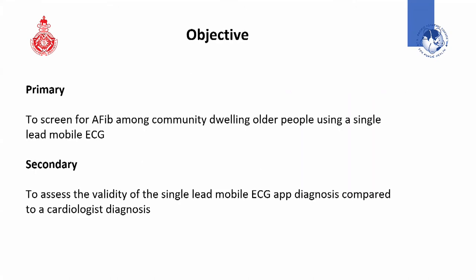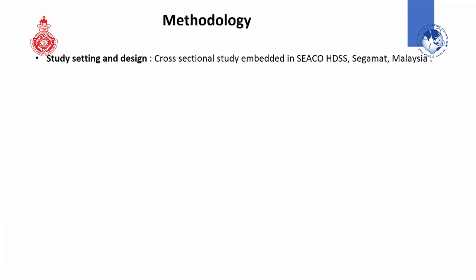This was a cross-sectional study embedded in the HDSS of SICO in Malaysia. All SICO participants enrolled as part of Health Round who were 70 years and above were approached, and all consenting adults were assessed. Interviews were conducted by trained data collectors during home visits. The outcome variable — AFib — was assessed using the iLifeCo cardiac mobile ECG, a single-lead handheld device that connects to a smartphone, gives a 30-second recording, and identifies possible atrial fibrillation. We also collected sociodemographic variables, comorbidities, and lifestyle factors.